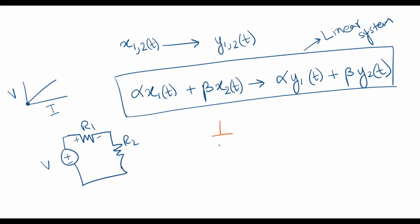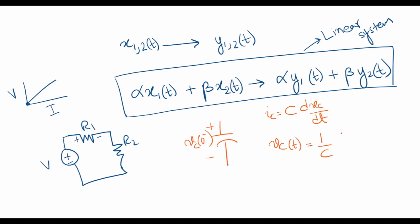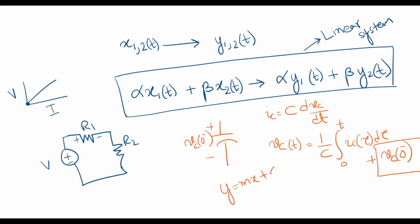An example of a non-linear system is a capacitor which is already holding some charge vc(0-), that is, it has memory. The relation for the capacitor is given by c·dvc/dt, and if I write vc(t), this would be (1/c) integral from 0 to t minus. Because of this initial charge which the capacitor is holding, it does not obey the principle of homogeneity — if there is no current, the output voltage is not zero. It is of the form y = mx + c, where if x goes to zero, y is still equal to c. So this represents a linear equation, but it is not a linear system.